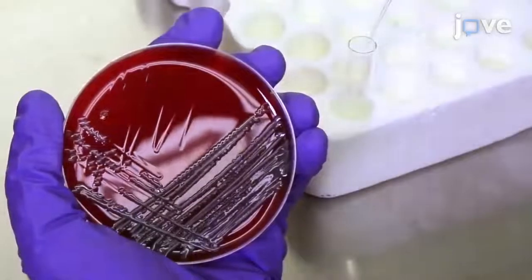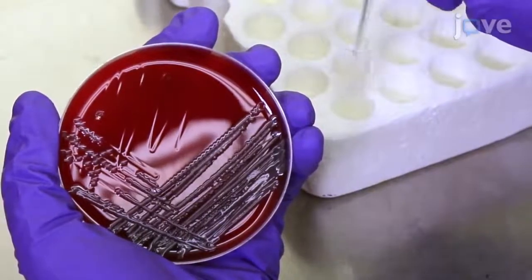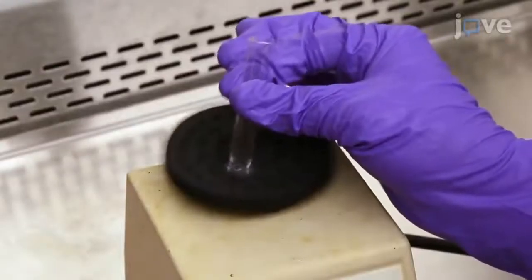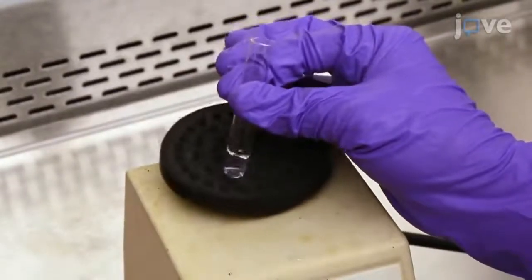Select one or two colonies from an overnight plate of bacteria and place them into the culture tubes. Vortex the tubes gently to suspend the bacteria in the solution.